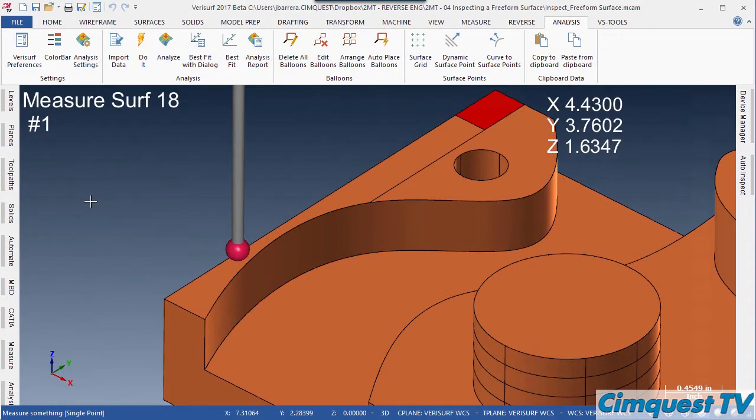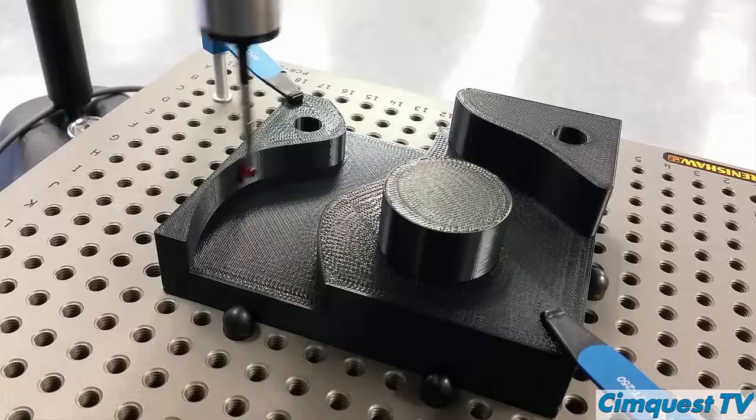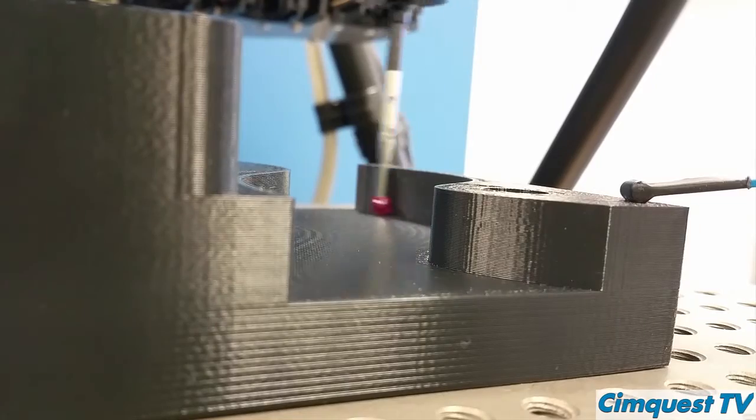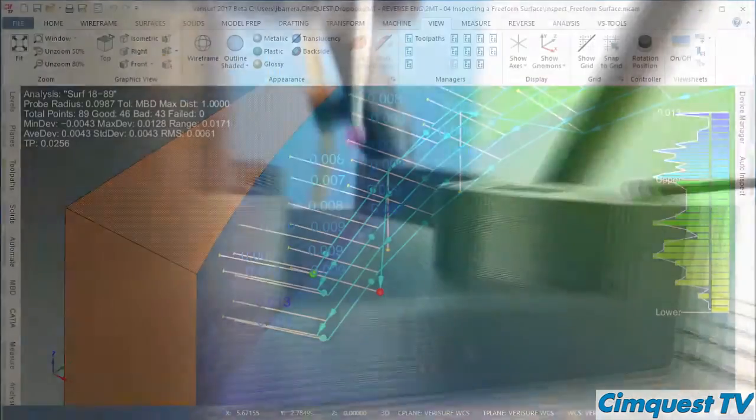Once I finish programming the probe path, I use the CMM master to inspect it. The probe then follows the automated repeatable path created in the Verisurf software and quickly scans and collects the data from each grid point.